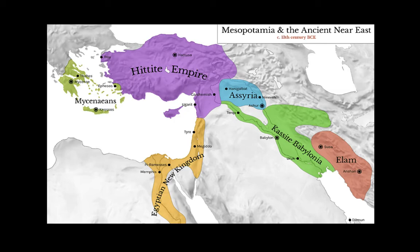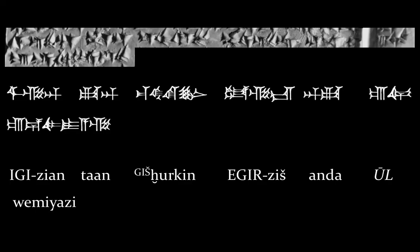For example, if we return to our text and we look at the word 'ul', ul is Akkadian for 'not'. So when the Hittites wanted to write down 'not', they spelled it 'ul', but they pronounced it 'natta', which is Hittite for the word 'not'. Here you can see the similarity between Hittite 'natta' and the English word 'not'. Hittite is an Indo-European language and it's an ancestor of most European languages, including English.